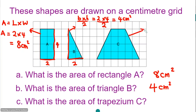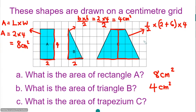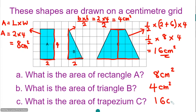For trapezium C, we use a half multiply the sum of the parallel sides. The top is 2 and the bottom counts 1, 2, 3, 4, 5, 6 — so 6. The vertical height counts 1, 2, 3, 4 — which is 4. Simplifying: a half times 8 times 4 gives 16 cm squared. So the area of trapezium C is 16 cm squared.